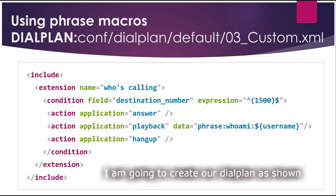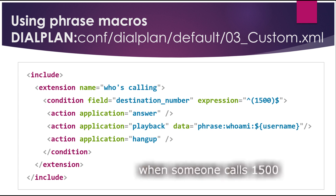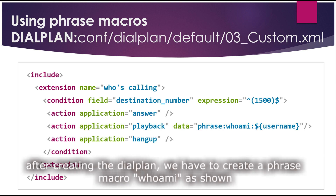I'm going to create our dial plan in a file called 03_custom.xml, where I'll put this small piece of dial plan which I'll call 'who is calling.' It will involve the destination number 1500, and when someone calls 1500, FreeSWITCH will answer the call and then play back the phrase macro, which you'll see shortly.